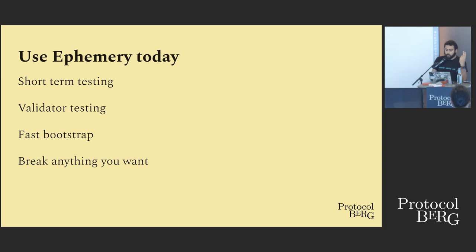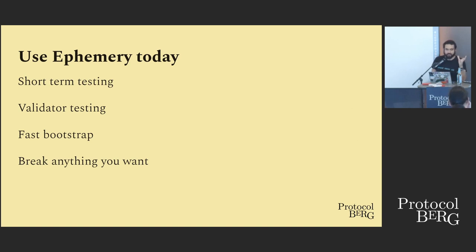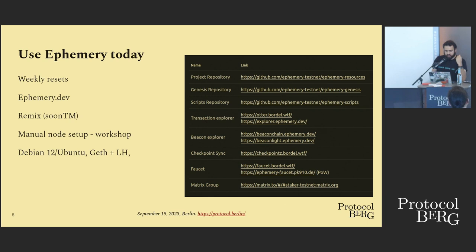Ephemery has an open, small validator set, so it's easy to spin up a validator and run it. Of course your validator will be gone in a week, but many people just want to try the deposit process, try how to activate it, and then do it on mainnet — for that single test, it's ideal. You can also run a validator long term but that requires following the resets. It's very fast to bootstrap since there's no history — it syncs immediately. You could have an archive node that's only maybe 10 megabytes. And you can break anything — drain faucets, put all the data there, really play with it.